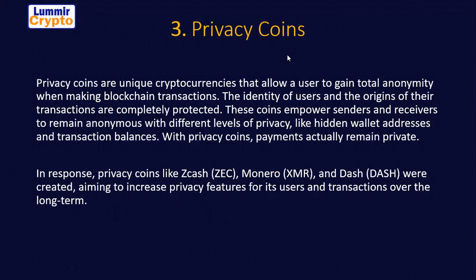The third classification is privacy coins. Privacy coins are unique coins that allow a user to gain total anonymity when making blockchain transactions. The user and the origin of their transaction are completely protected. These coins empower senders and receivers to remain anonymous with different levels of privacy, including hidden wallet addresses and transaction balances. With privacy coins, payments actually remain private.